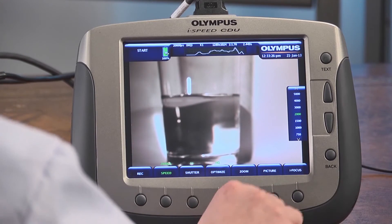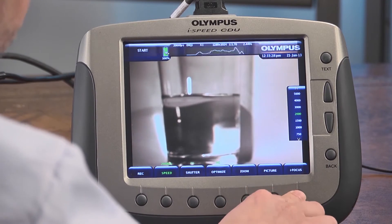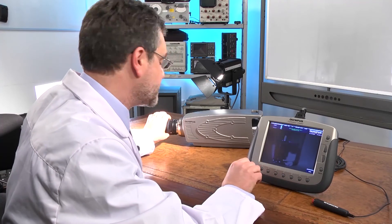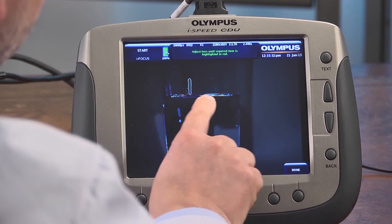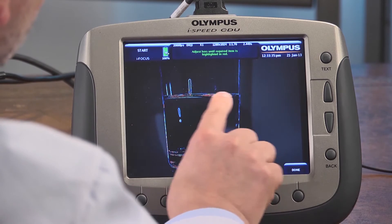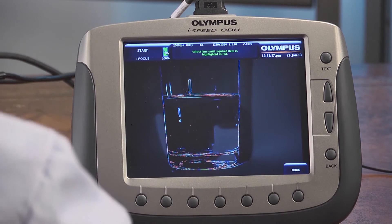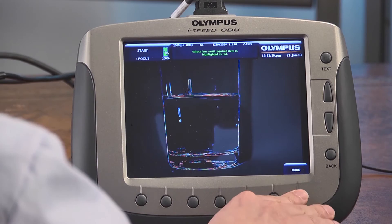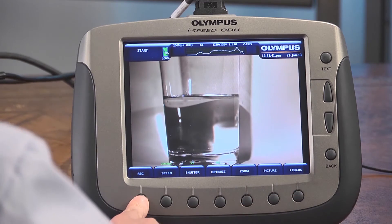But it does seem that I'm a bit out of focus. So let's press the iFocus control and as I adjust the focus of my camera, you'll see that the CDU shows with a red highlight exactly when the focus is perfect. I can press the done button now and I can start recording.